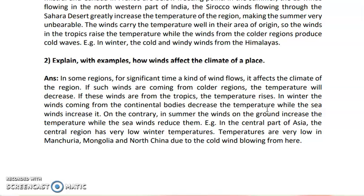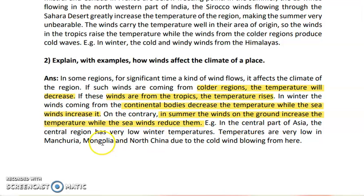Question 5, part 2: Explain with example how winds affect the climate of a place. In some regions, a particular wind flows for a significant time and affects the climate. If such winds come from a colder region, the temperature decreases; if from a hotter region, temperature rises. In winters, continental winds gradually decrease the temperature while sea winds increase it. In summer, ground winds increase temperature while sea winds reduce it. This is observed in central Asia, where temperatures fall due to cold winds in Manchuria, Mongolia, and north China.